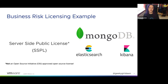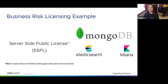Situations like this increase your business risk and can impact your ability to deliver software. License changes require time from lawyers to interpret new licenses, and new restrictions on how we use an open source project could delay product delivery and decrease productivity if we need to spend extra time finding and implementing a suitable replacement.